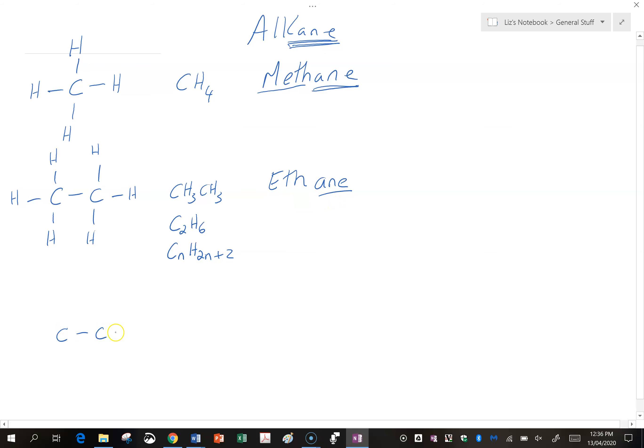Okay, now we can continue this with three carbons. So again, every carbon has four bonds. Now we could write this as CH3CH2, because this middle carbon only has two hydrogens, CH3. But more commonly, we write it as C3H. Now remembering our rule, it's 2 times n, n is 3, plus 2. So 2 times 3 is 6, plus 2 is 8.